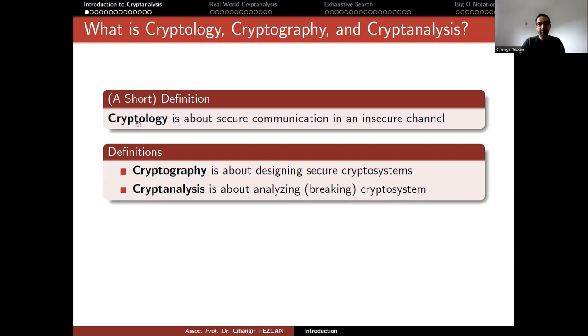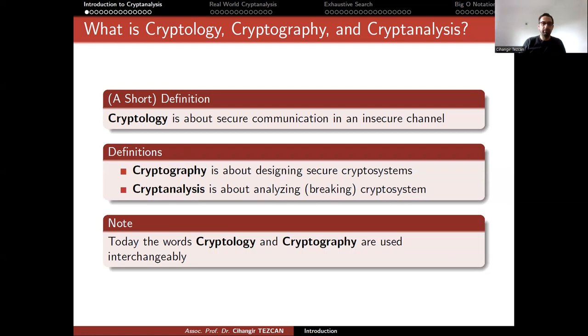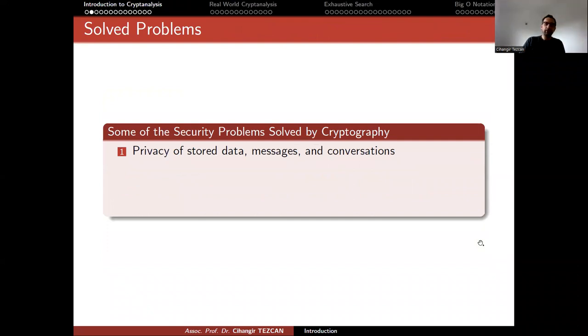So, as you can see, cryptography and cryptology were used as different terms in the past. But today, the words cryptology and cryptography are used interchangeably. So I already mentioned before that cryptography solved a lot of problems. First of all, it solves the problem of confidentiality. So we can provide privacy of stored or transmitted data, messages, and conversations.